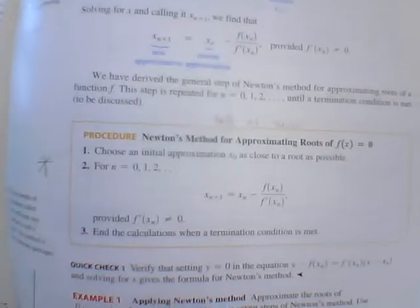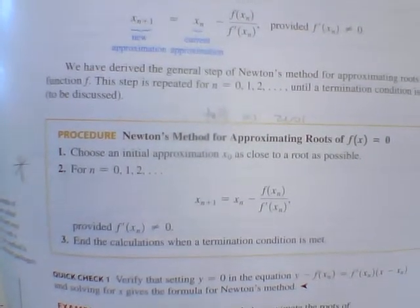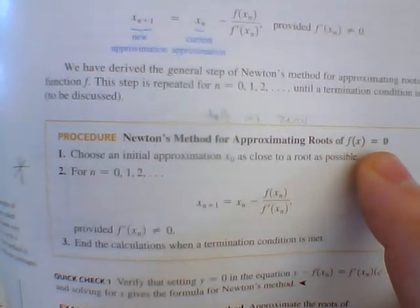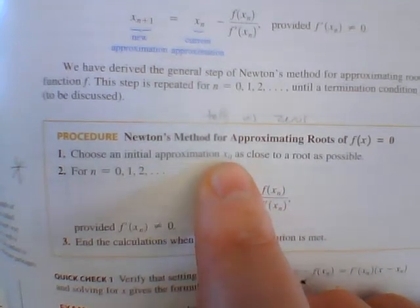So if we look at Newton's method for approximating roots, notice I have a little note up here, it tells us zero. So it tells us when does this function equal zero. We'll choose an initial approximation, x_0, as close to a root as possible.